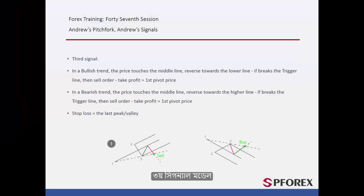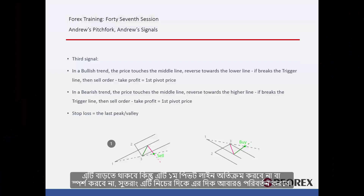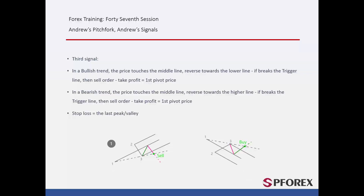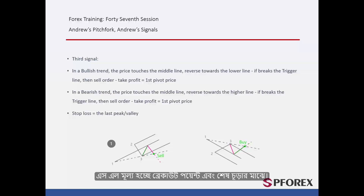Third signal model. In a bullish format, after the price has reached the third pivot, it will increase but it will not cross or touch the first pivot line. So it will change its direction towards the bottom again. After the price crosses the trigger line, a trader can place a sell order with TP price equal to the first pivot price. SL price is between the breakout point and the last peak.